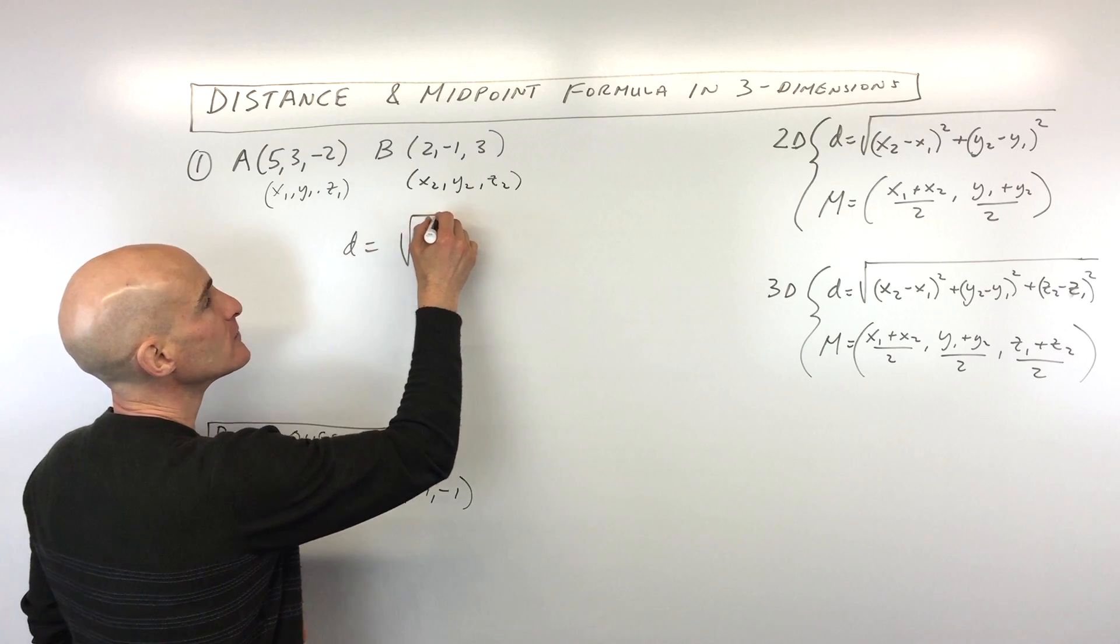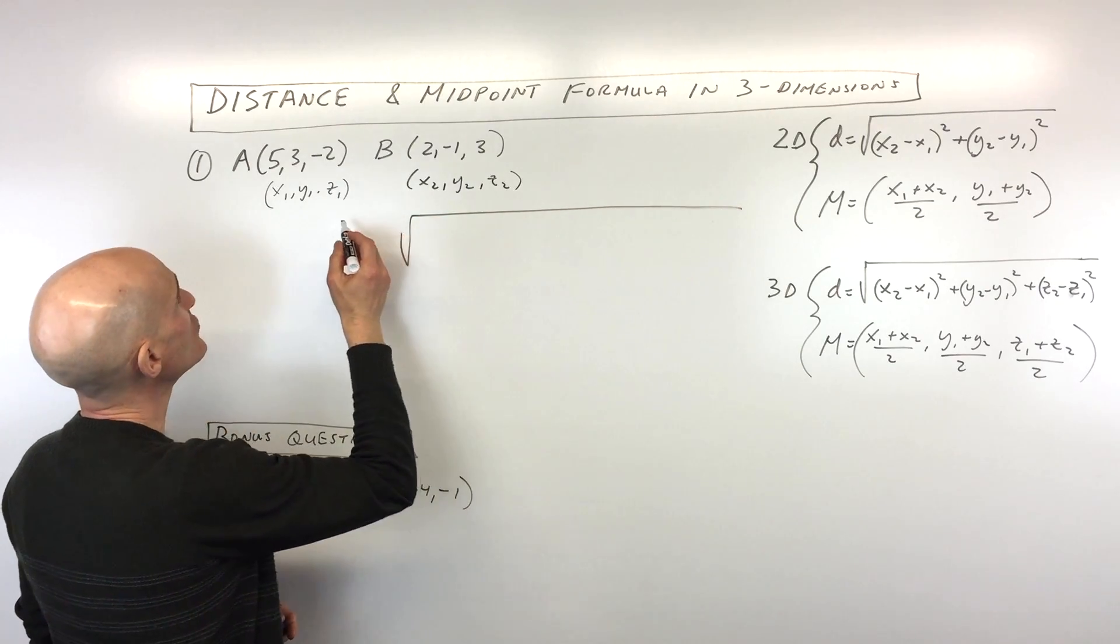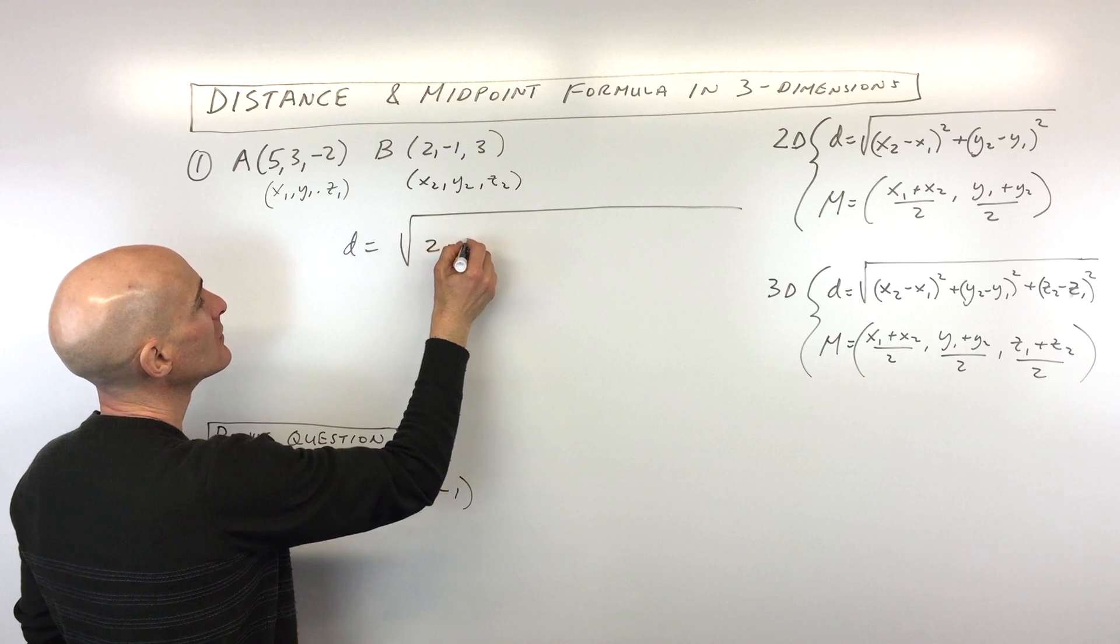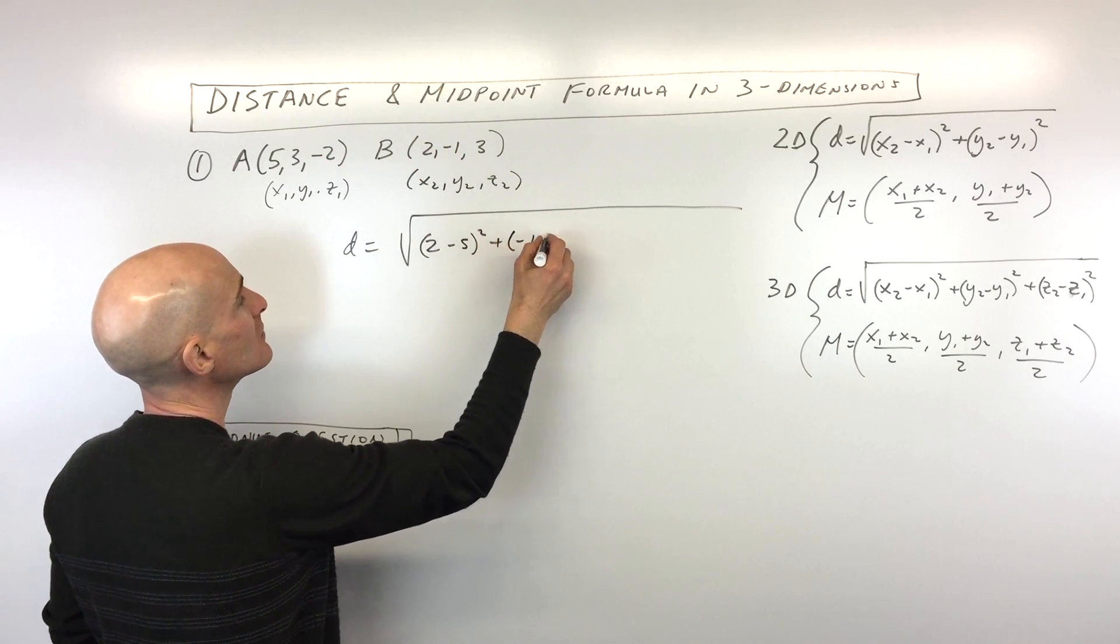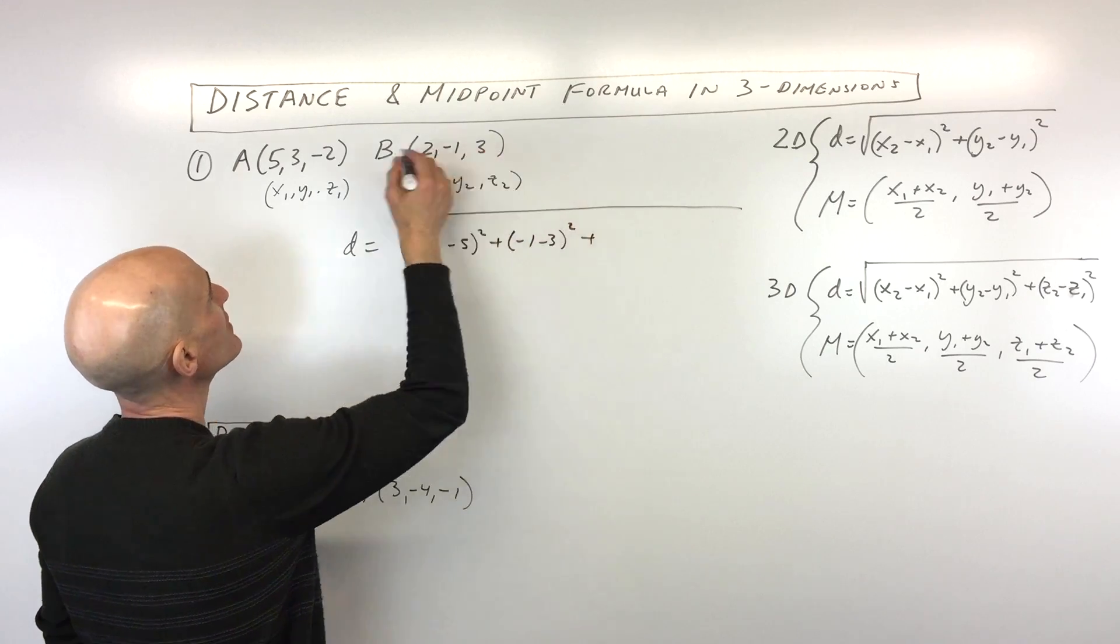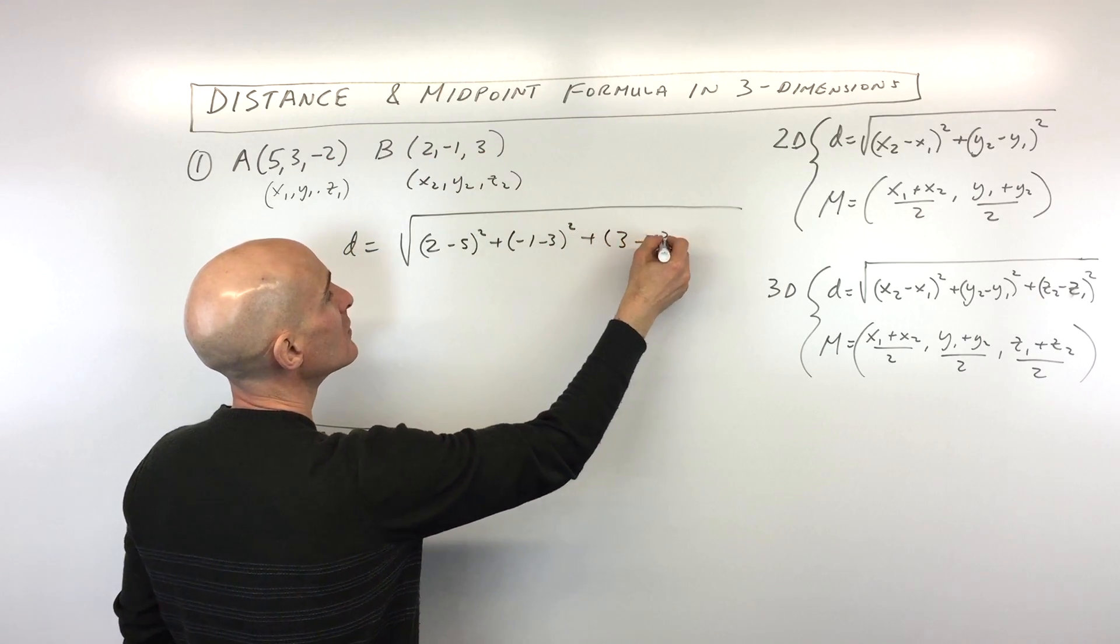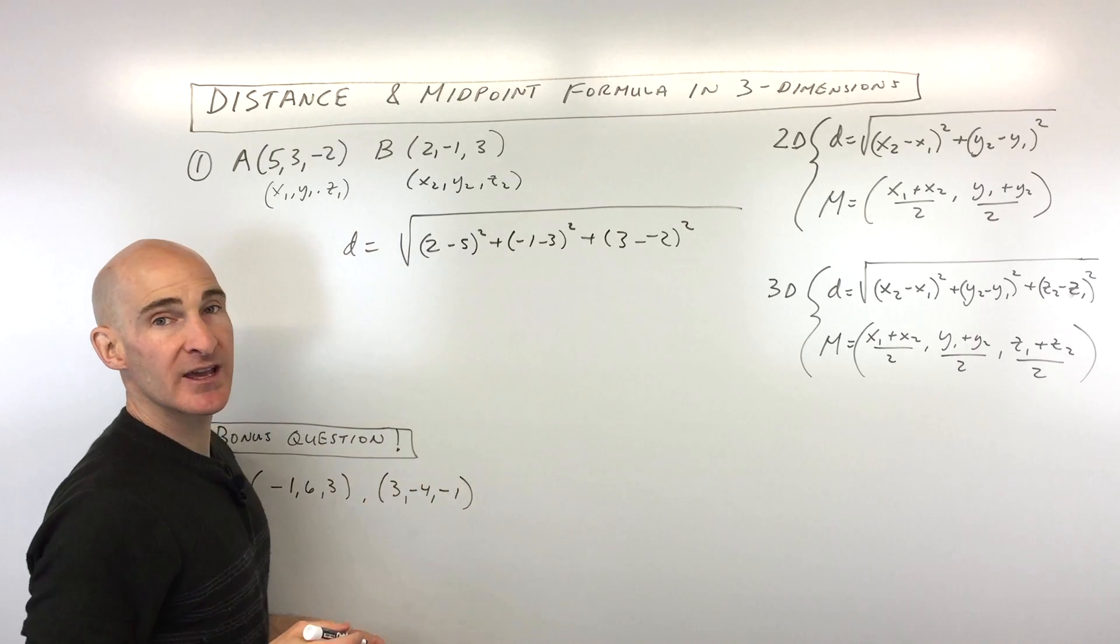So distance, what do we do? Well, what we have to do is subtract the x's, so I'm gonna do (2 - 5)² plus (-1 - 3)² plus (3 - (-2))². Now be careful with those negatives.